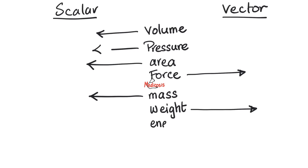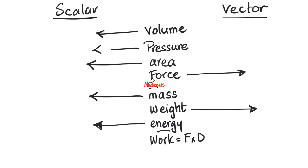Let's try energy. The energy consumed by a certain metabolic pathway is 10 joules — no directions, just an amount, just a magnitude with no direction. So energy is scalar. How about work? Work equals force times displacement. Force has a direction — force is a vector. Displacement is a vector. Vector times vector can give you a scalar. Work is a scalar. Energy is the ability to do work; both energy and work are scalar entities.